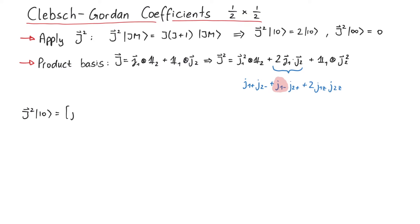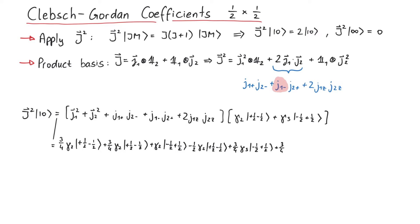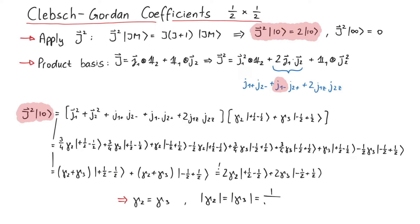After writing uppercase J in terms of lowercase operators, we can apply uppercase J squared onto 1 0. This is a bit of a tedious calculation, but in the end, we arrive at the result containing the sum of gamma 2 and gamma 3. Since we know from the result of the coupled basis that this should be equal to 2 times 1 0, we see that gamma 2 and gamma 3 have to be equal, which means that their absolute value has to be 1 over the square root of 2. But note that we cannot determine the phase of those complex numbers just yet.